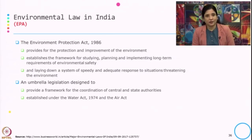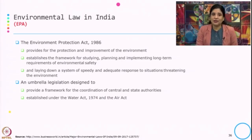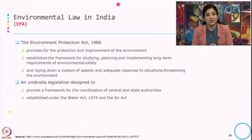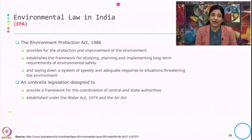Then we have EPA, the Environment Protection Act of 1986. It provides for the protection and improvement of the environment and establishes a framework for studying, planning, and implementing long-term requirements of environmental safety. It lays down a system for speedy and adequate response to situations threatening the environment. This is an umbrella legislation designed to provide a framework for coordination of all central and state authorities established under the Water Act and Air Act.